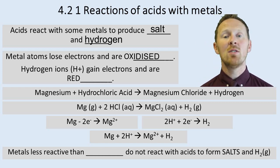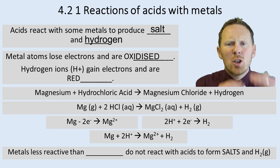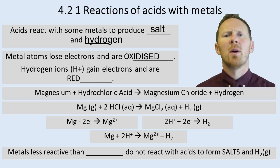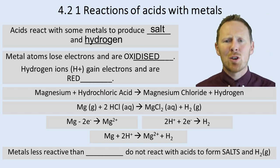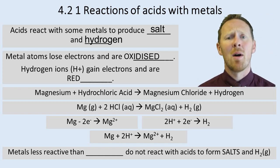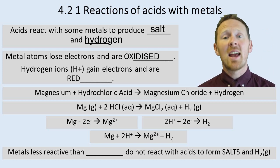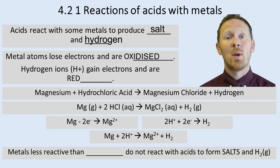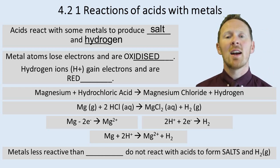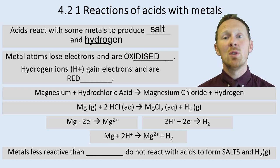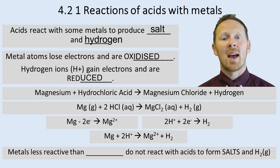And hydrogen ions, given the symbol H+, please make sure you have the plus as a superscript, not in the middle like it is on this. Make sure it goes superscript to get it right and get your mark in the exam. It gains electrons - we know that reduction is gain of electrons. So hydrogen ions gain electrons and are reduced when metals react with acids.